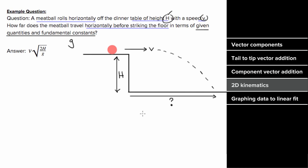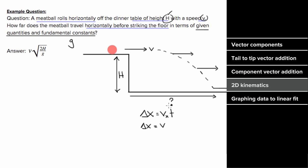The given quantities are things like h and v, and fundamental constants include little g. The quantity we want is the displacement in the x direction, which equals the speed in the x direction times the time of flight. We know the speed in the x direction remains constant, so v is the horizontal speed for the entire trip. We can plug in v for the speed, but we don't yet know the time of flight.